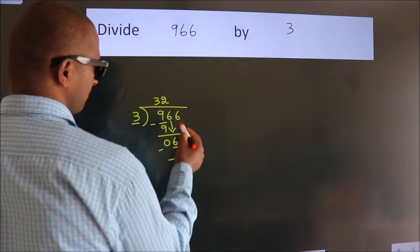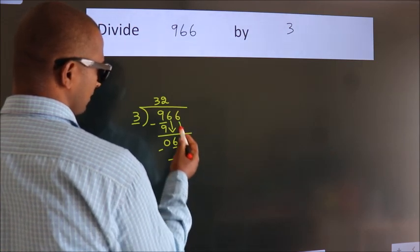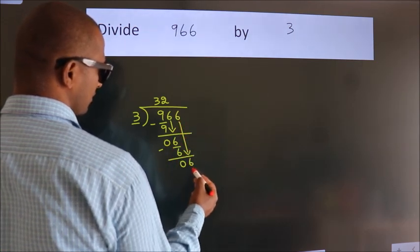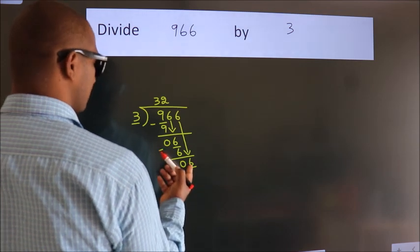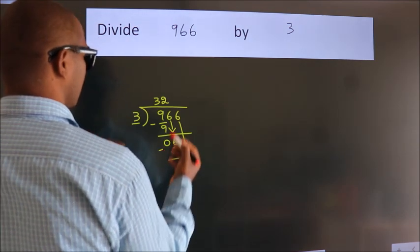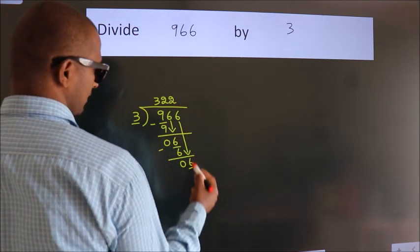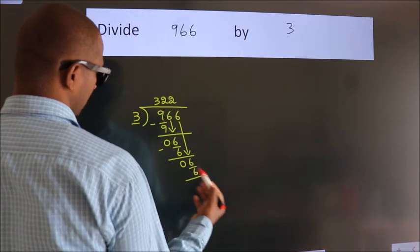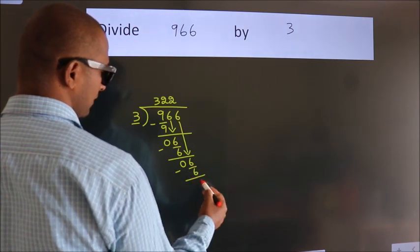After this, bring down the beside number. So, 6 down. When do we get 6 in the 3 table? 3 2's are 6. Now we subtract and we get 0.